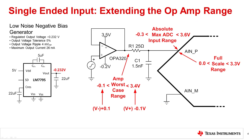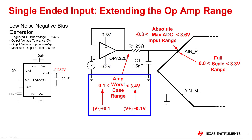In the previous slide, the amplifier's linear output range was more narrow than the ADC's full scale range, wasting some of the data converter's input range. Here, we adjust the amplifier's supplies to increase the amplifier's linear output range so that we can use the full ADC input range. Adjusting the amplifier's supplies to negative 0.2 volts and 3.5 volts increases the output range to negative 0.1 volts to 3.4 volts. This output range is wider than the data converter's full scale range, so no codes are wasted.